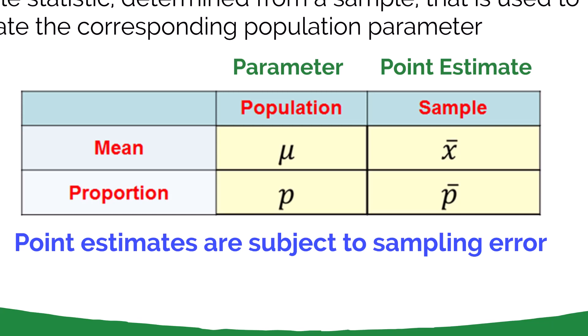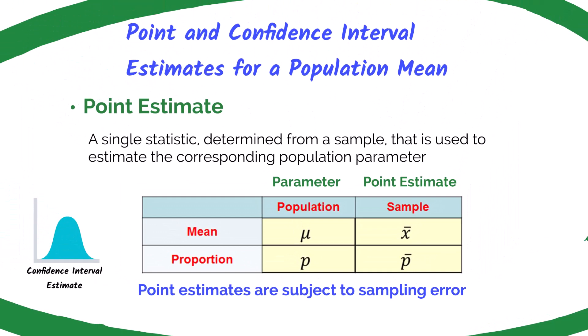Recall in chapter 7 that we learned about sampling error — a statistic from a sample is subject to sampling error because it's not a perfect representation of our population and its parameters. In this chapter, we're going to build on our point estimate by developing a confidence interval estimate around it. For instance, the interval for the time it takes me to drive to campus could be between 35 and 45 minutes depending on traffic or the day of the week.